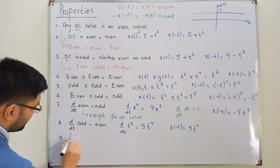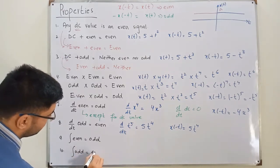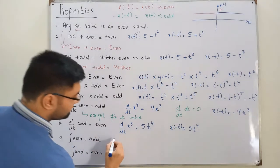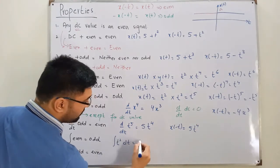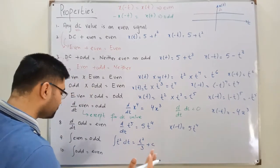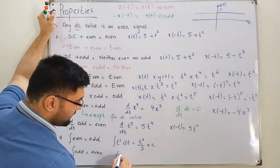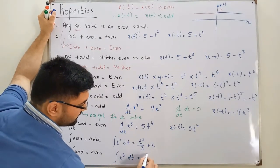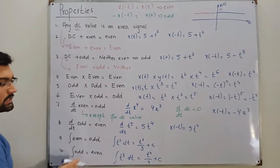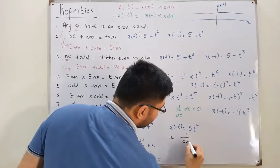The ninth property: the integration of an even function is an odd function. For example, the integral of t² dt equals t³/3 + C, and t³ is an odd function. The tenth property: the integration of an odd is even. For example, the integral of t³ dt = t⁴/4 + C. Time-reversing gives X(-t) = X(t), confirming it's an even signal.